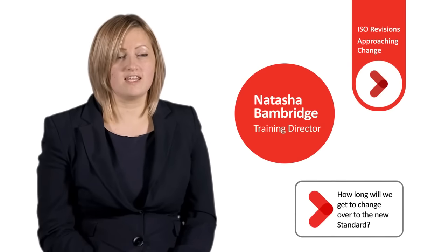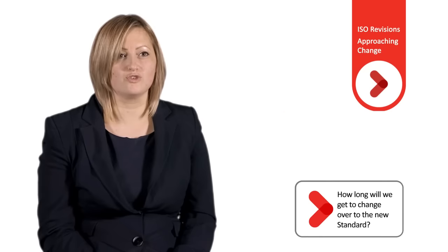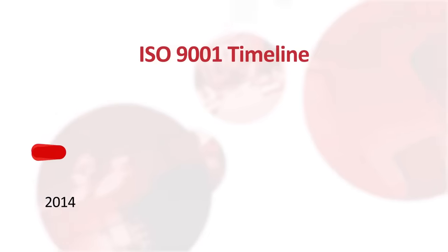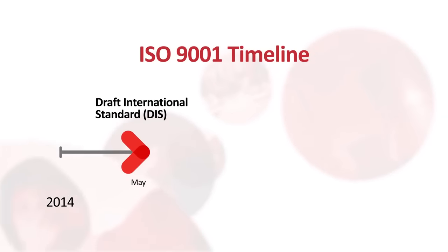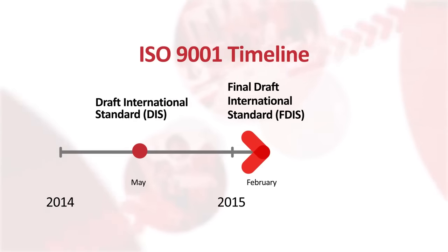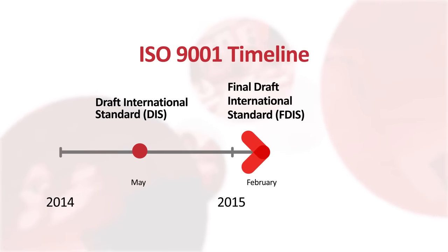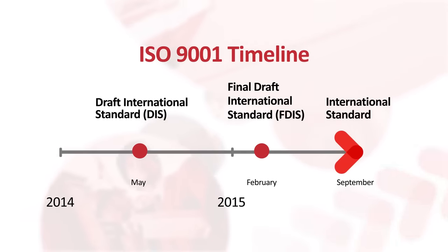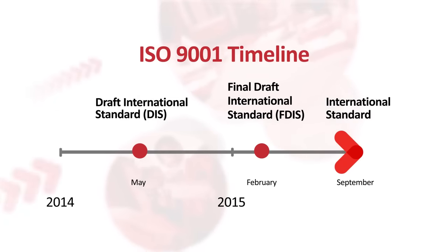The national standards body within each country are working with their local committee to review the draft standard and collating all of the feedback. Here are the timings that you need to know. Early May 2014, the draft international standard known as the DIS will be published for ballot. February 2015, the final draft international standard known as FDIS is expected to be published for ballot. In September 2015, the international standard is then expected to be published.